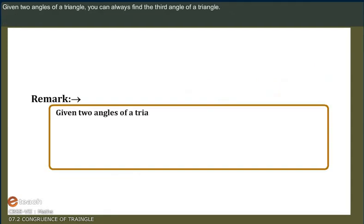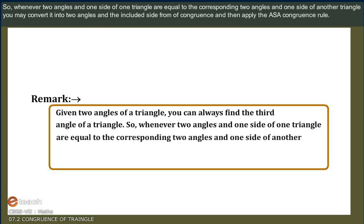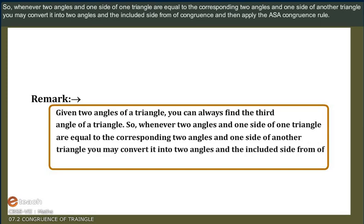Given two angles of a triangle, you can always find the third angle. So whenever two angles and one side of one triangle are equal to the corresponding two angles and one side of another triangle, you may convert it into the two angles and included side form of congruence and then apply the Angle-Side-Angle Congruence Rule.